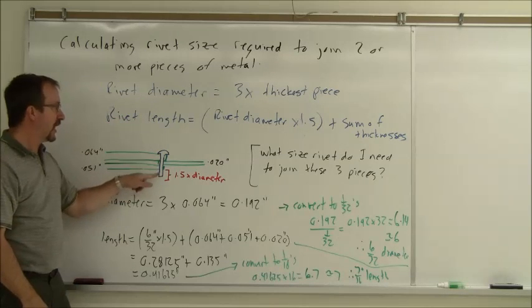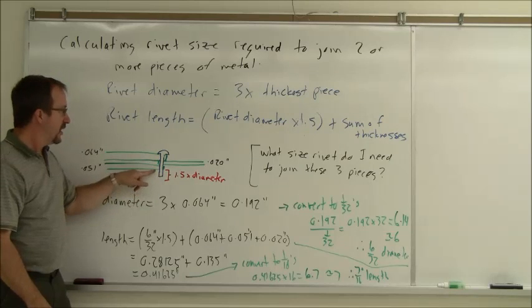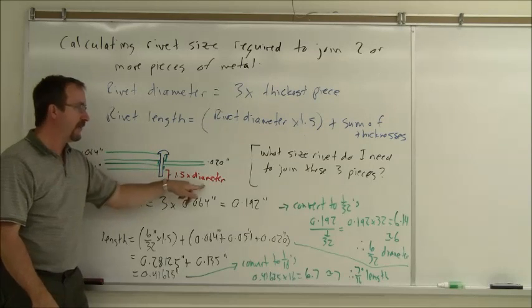I need to have the length of the rivet the same as the sum of all the thicknesses plus one and a half times the diameter sticking out.